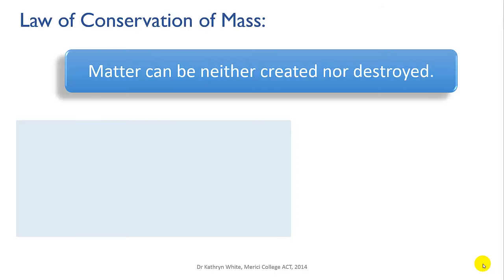The law of conservation of mass states that matter can neither be created nor destroyed. It can be changed from one form into another, and mixtures can be separated or made, and pure substances can be decomposed into other pure substances, but the total amount of mass remains constant.